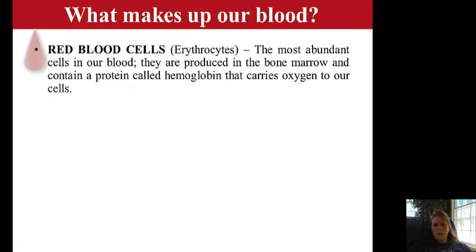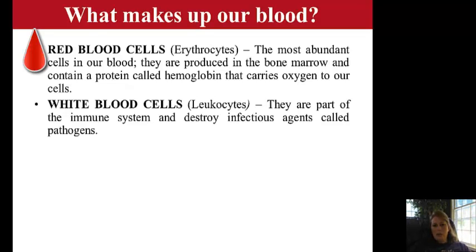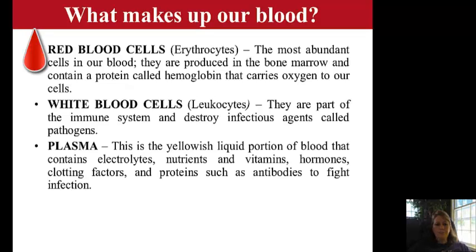First we have the red blood cells, those are called erythrocytes. Hemoglobin is going to carry our oxygen to our cells, and so eventually it will go to the lungs and then be distributed out to the different cells in our body. White blood cells are called leukocytes and that's going to fight infection.